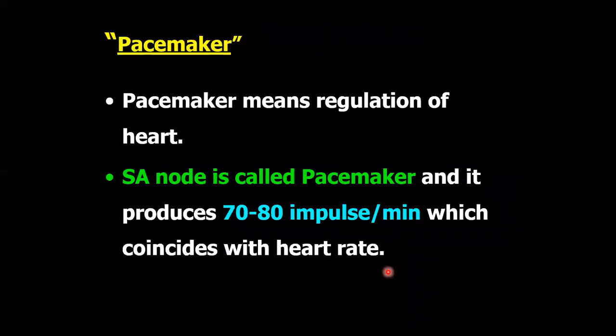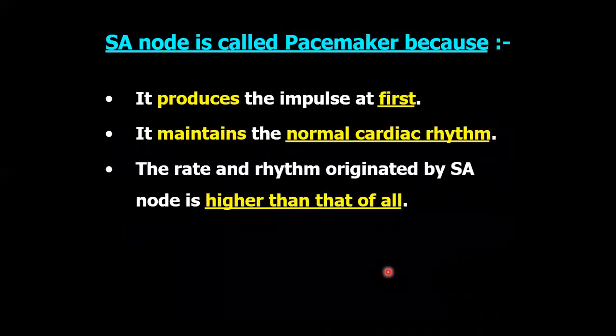Pacemaker means regulation of the heart. The SA node is called the pacemaker because it produces impulses first, its impulse rate is 70 to 80 impulses per minute, and it maintains the normal cardiac rhythm. The rate and rhythm originated by the SA node is higher than that of all other cardiac tissues.